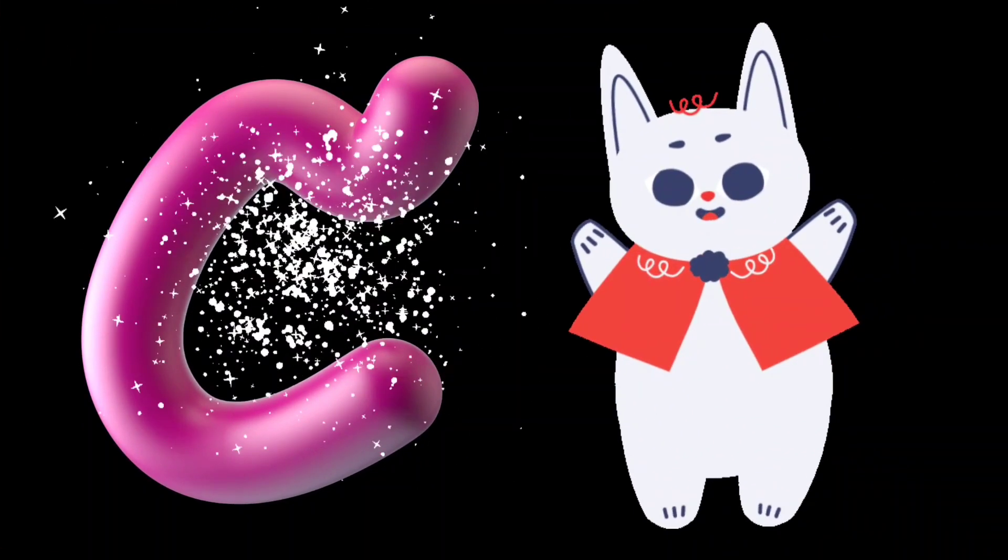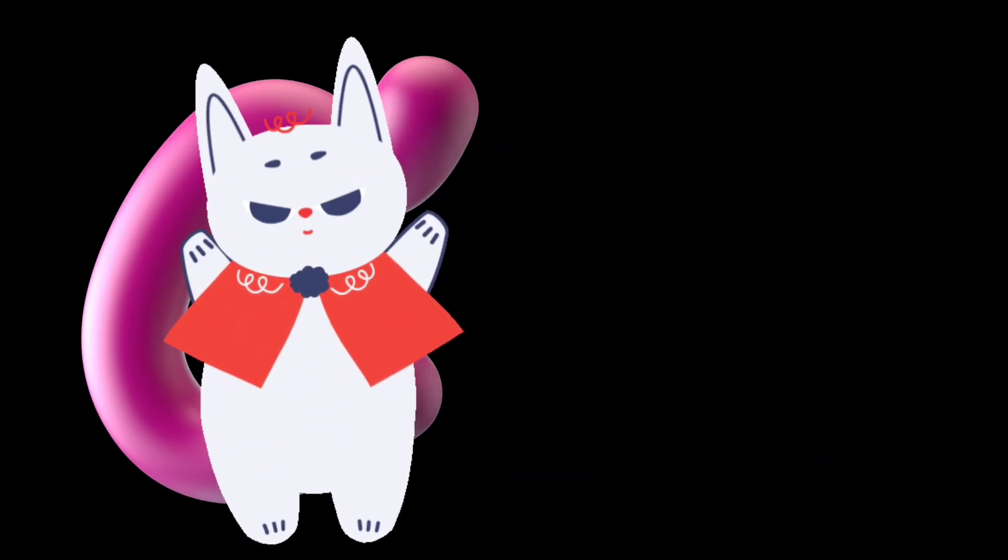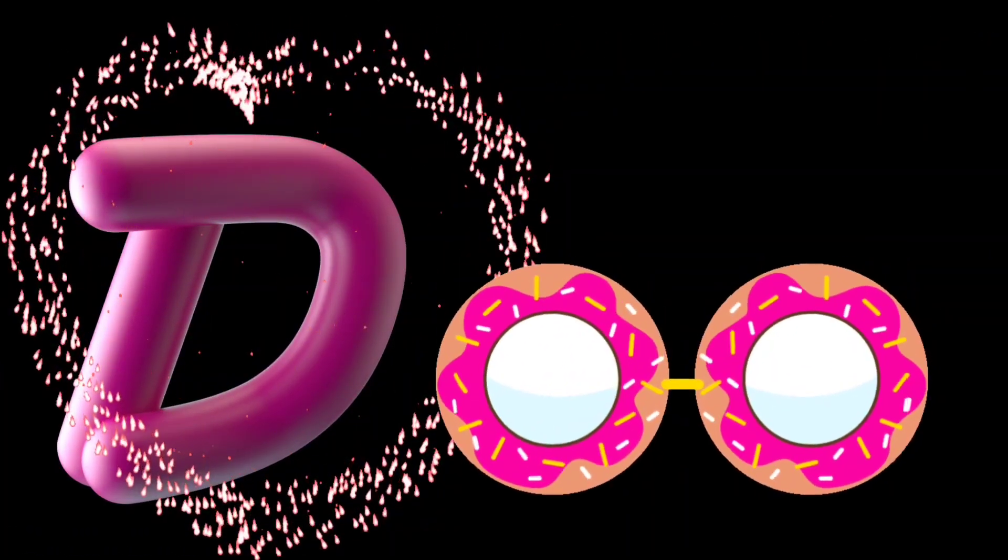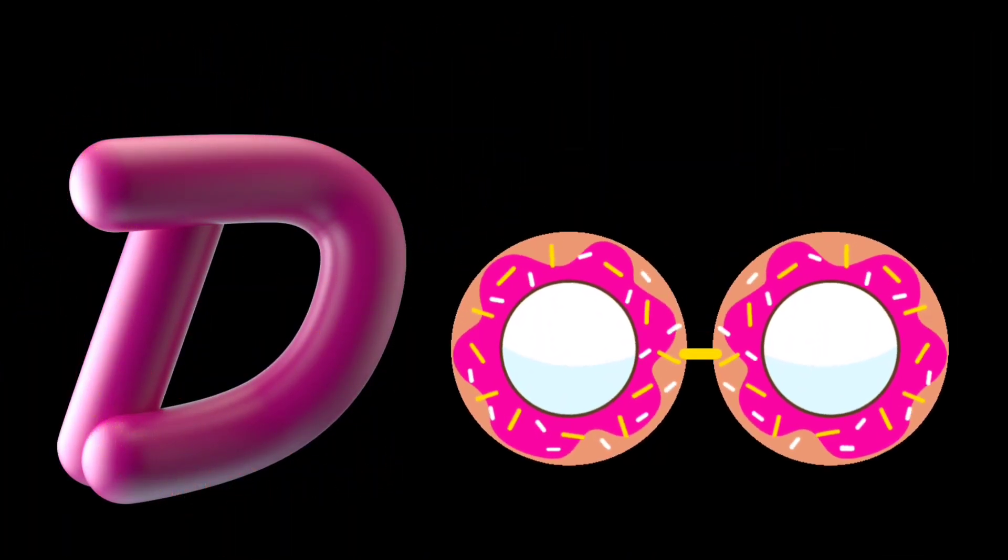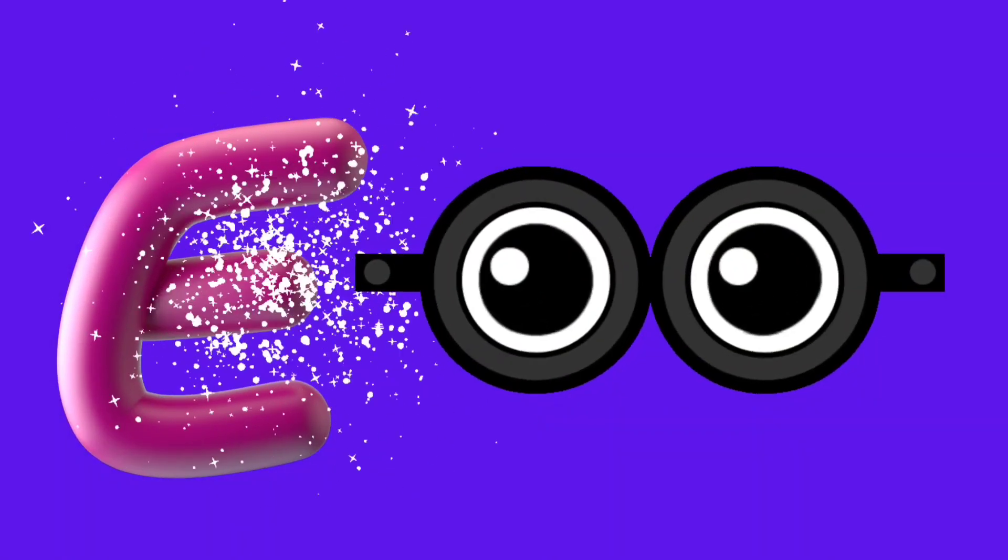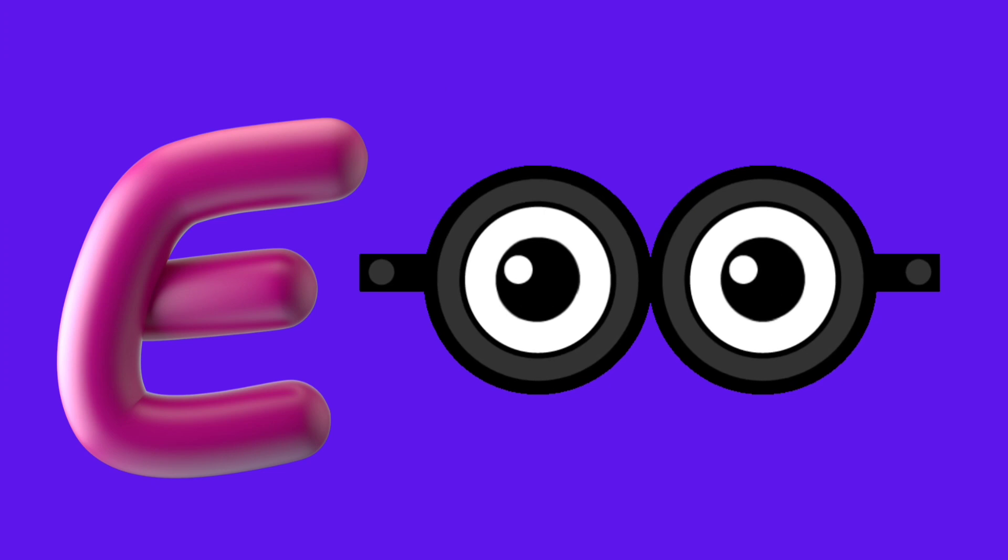C. C is for cat. D. D is for donuts. E. E is for ice.